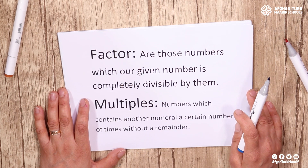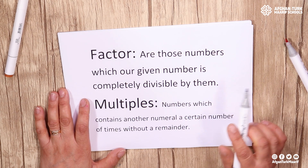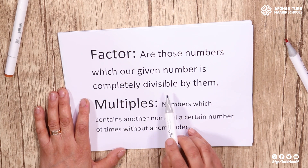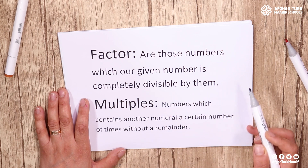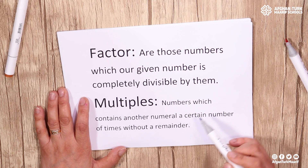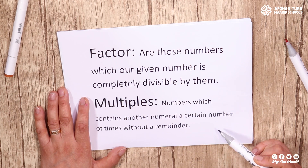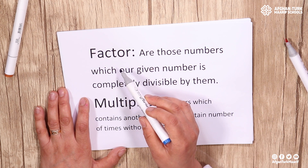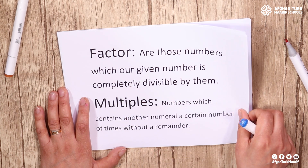What's the meaning of factor? As we studied in our previous lessons, factors are those numbers which our given number is completely divisible by, without remainder. And multiples are numbers which contain another number a certain number of times without a remainder. Today our lesson is about finding the highest, the biggest factor of two or three numbers.